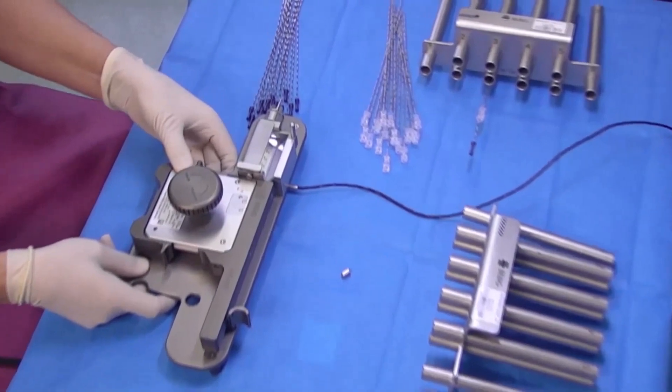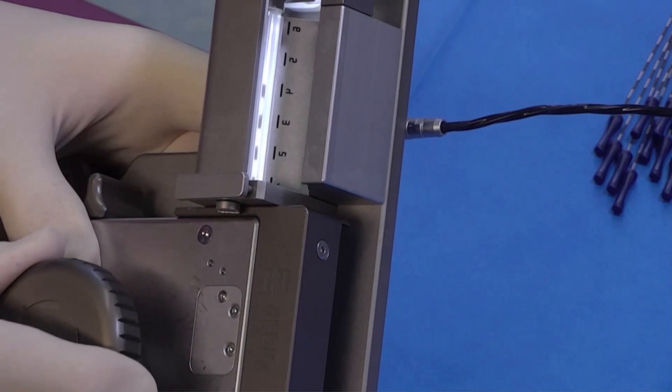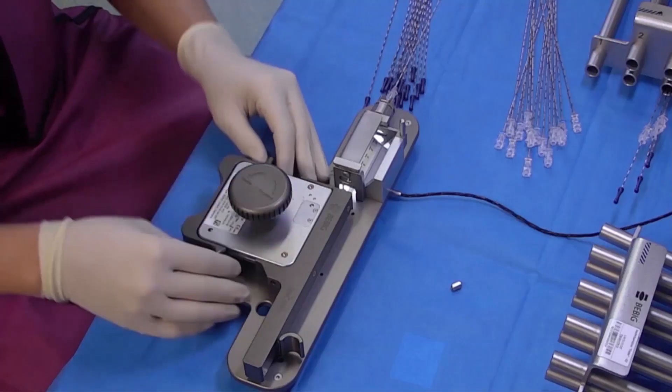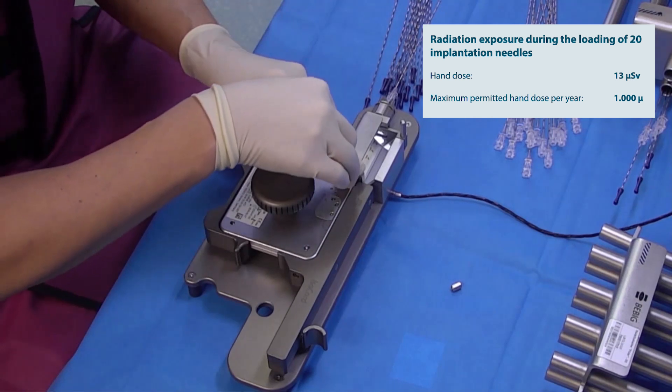According to the treatment plan, seed chains, which are linked seeds, are then prepared and transferred into implantation needles. The radiation exposure of the medical staff during this step is low.